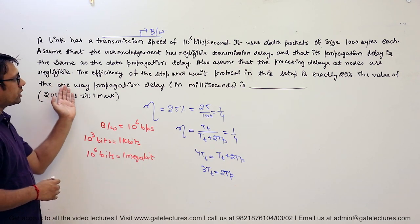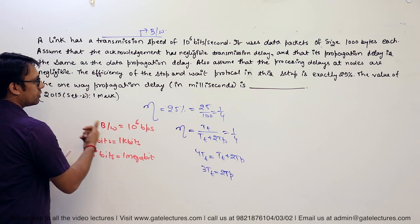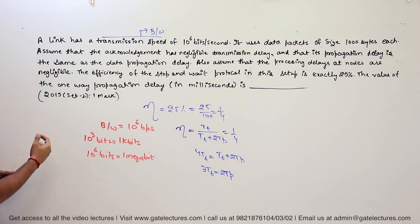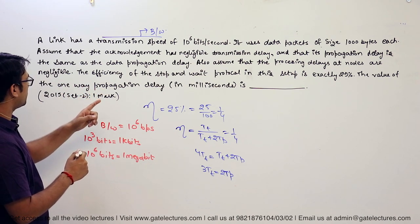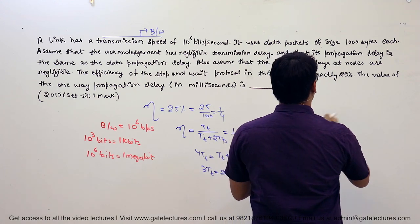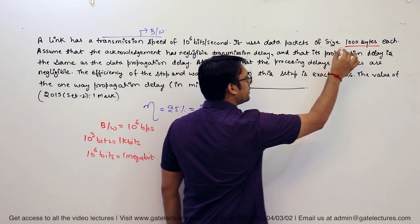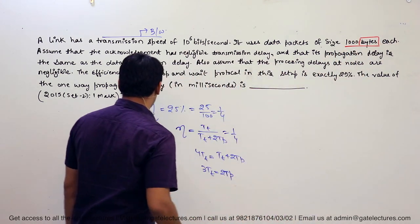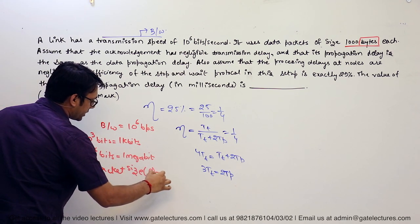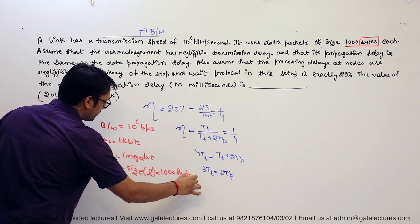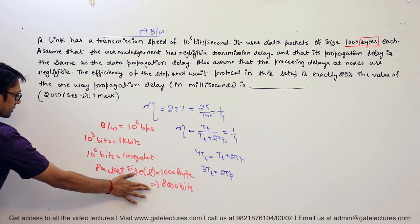They are asking for the propagation delay, and they have already given the bandwidth and the size of the data packet. The packet size is 1000 bytes each — make sure it is bytes, that is an important term. So packet size, or length of the packet, is 1000 bytes, which equals 8000 bits. That is a very important value we are going to use.